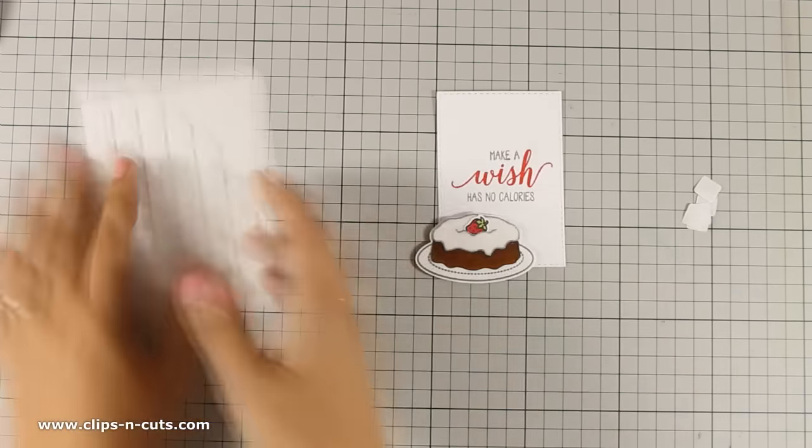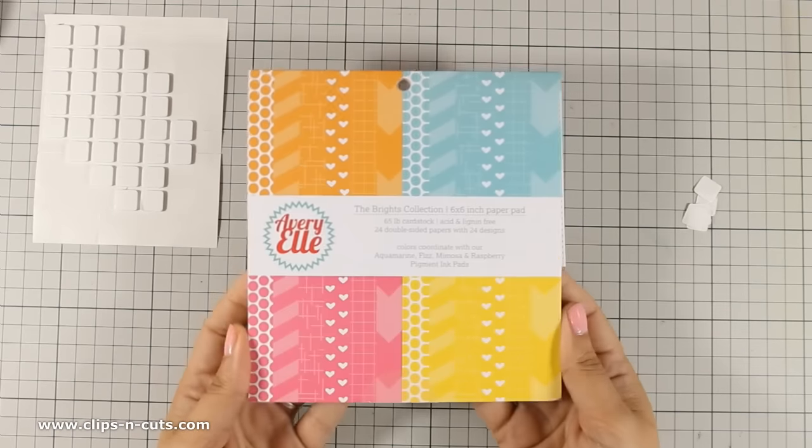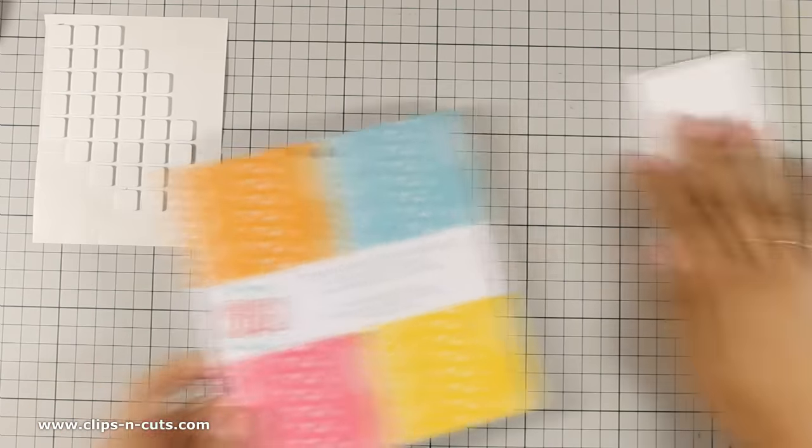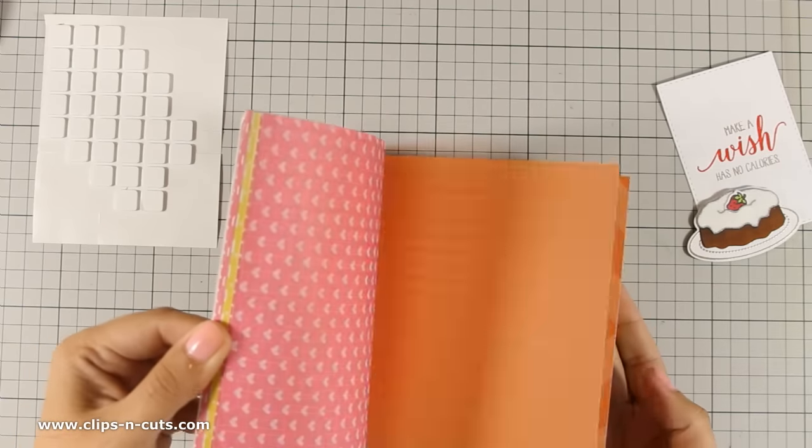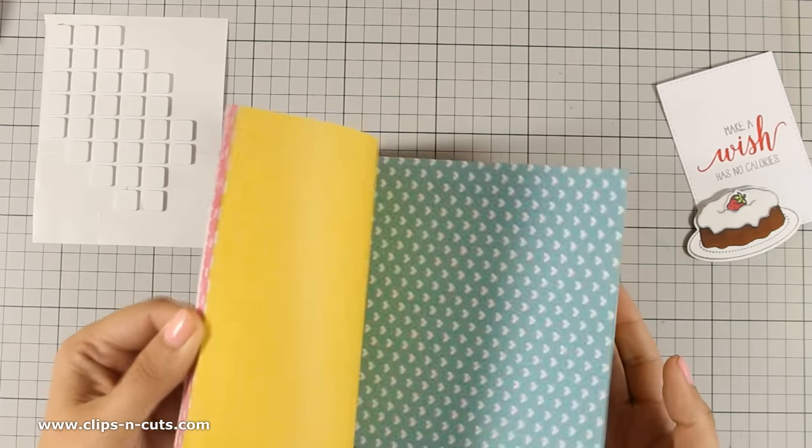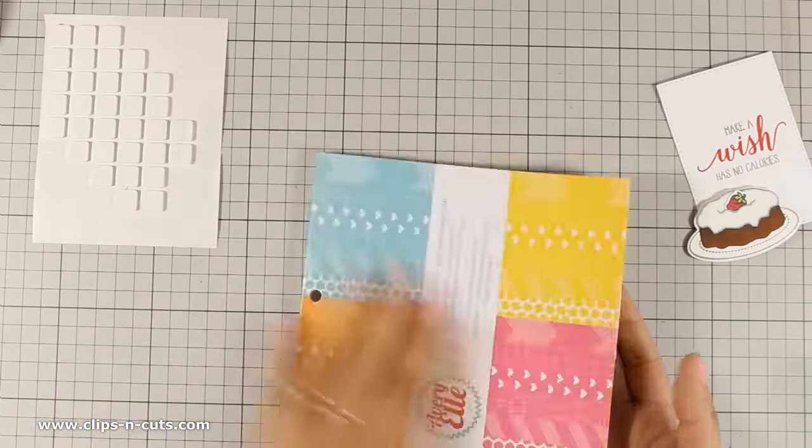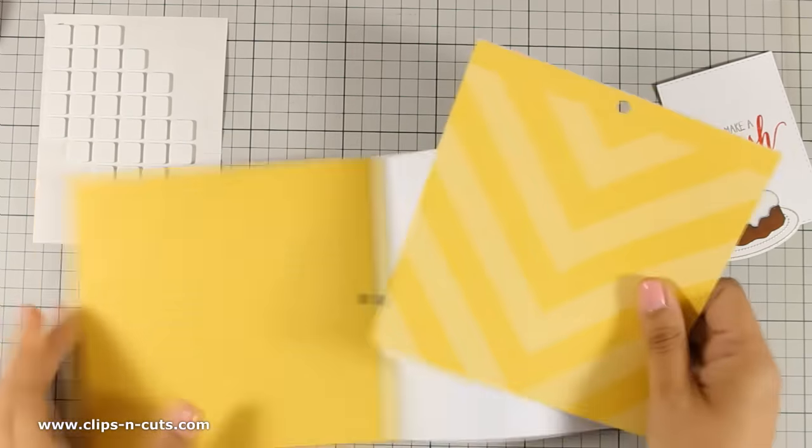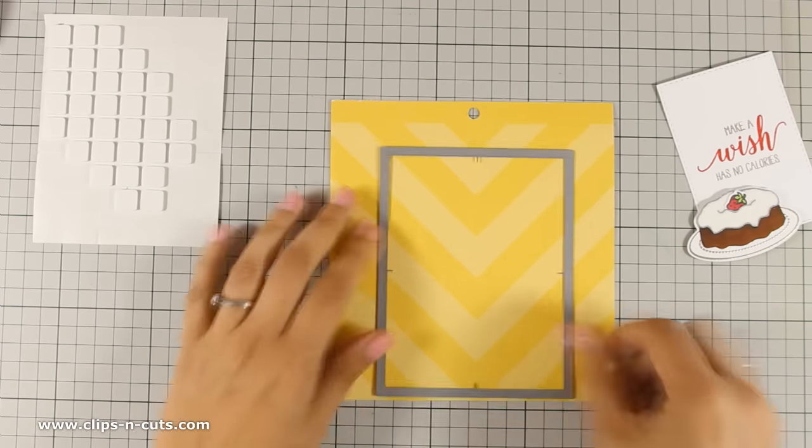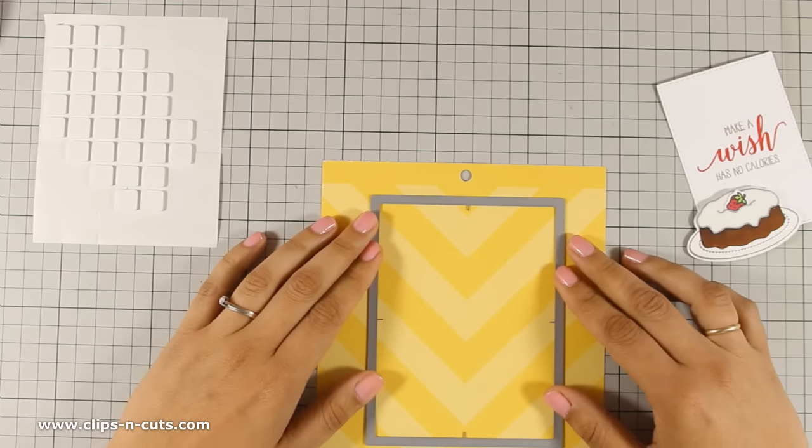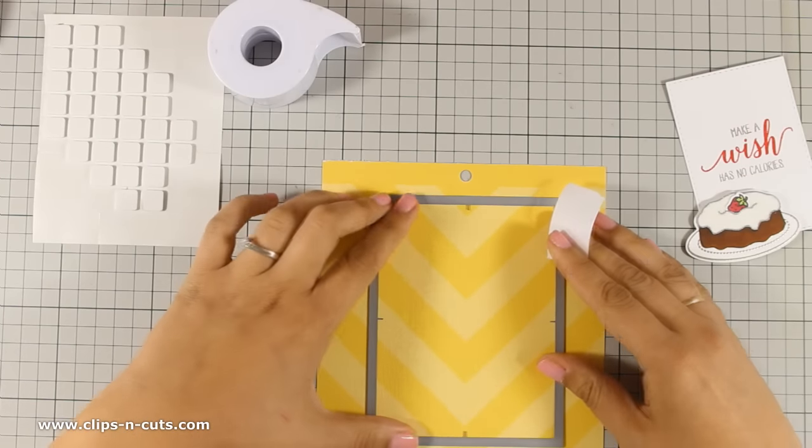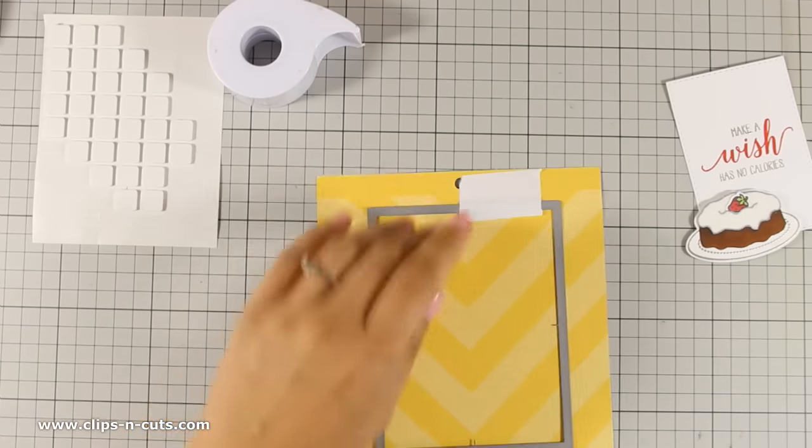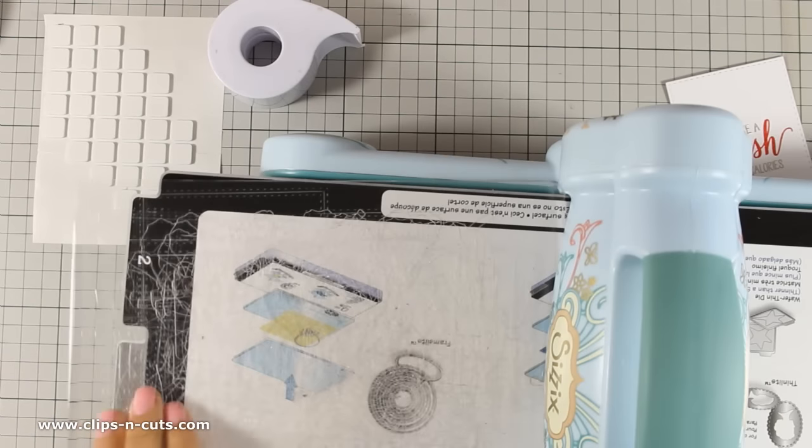However I need some pattern paper for the background. This is an Avery Elle paper pad and it is the Neutrals collection and I really love the designs because they are very generic, they are chevrons, little hearts, stripes and very vibrant colors. So if you are on the look for a nice pattern paper I think that is it. I am going to stick this die at the center of the chevron and I am going to die cut it with my Sizzix machine.